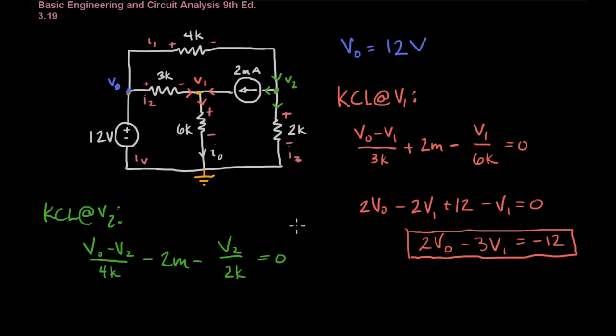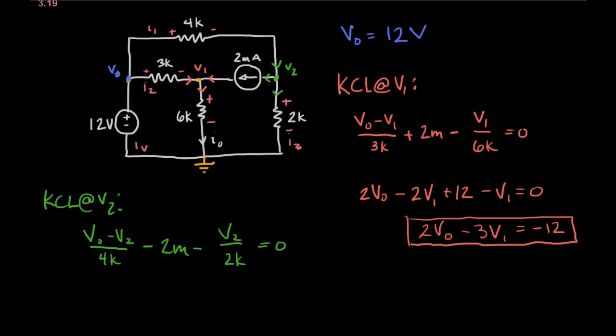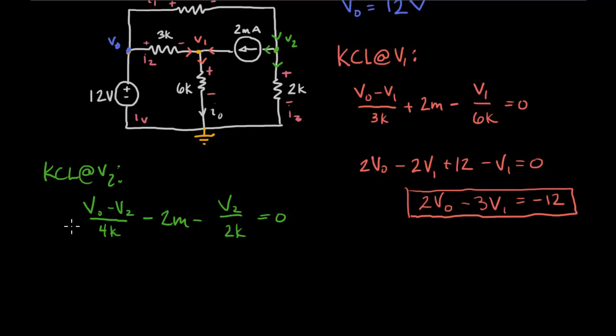And now we can use 4K as our common denominator. And we'll end up with V0 minus V2 minus 8 minus 2V2 equals zero. And finally, V0 minus 3V2 equals 8.